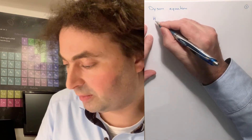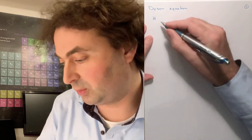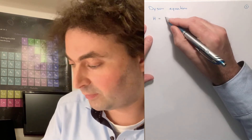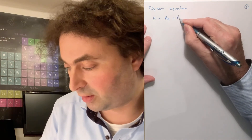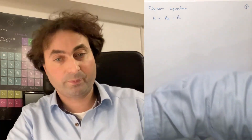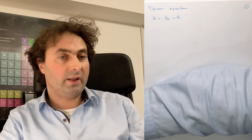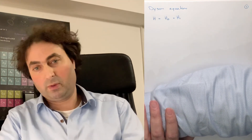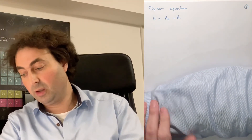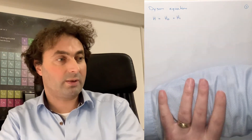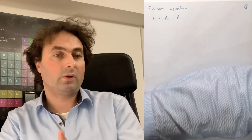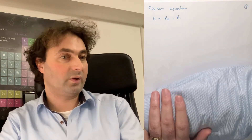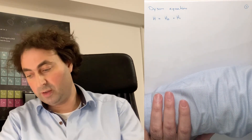In many cases we'll find that our Hamiltonian, which is hard to diagonalize, can be written as a Hamiltonian that is much simpler plus a Hamiltonian that makes it hard. The most common example is the case of Coulomb interaction, where H0 can be, for example, the Hartree-Fock Hamiltonian and then H1 is the correction to that, where you now explicitly include the Coulomb interaction.